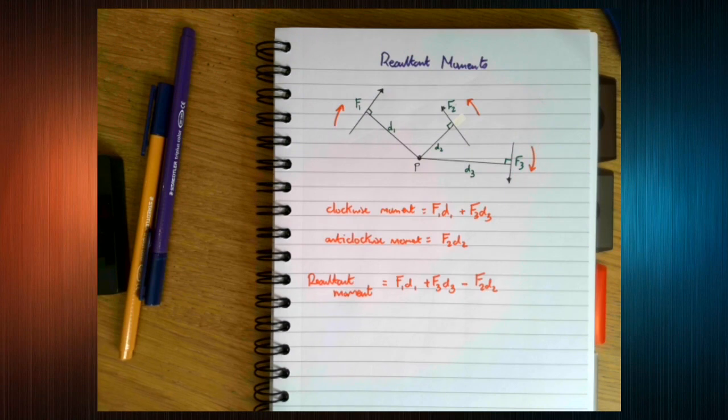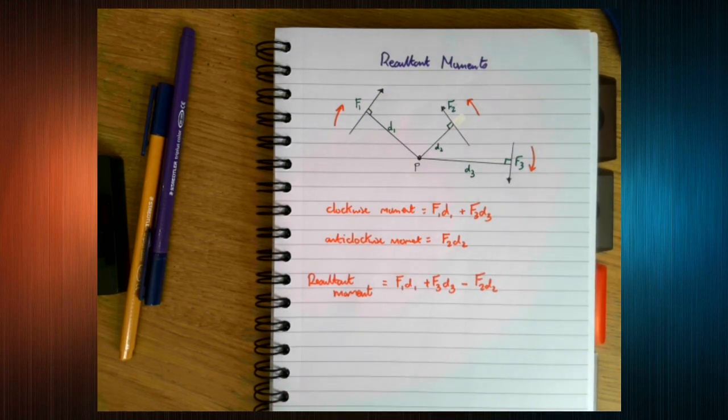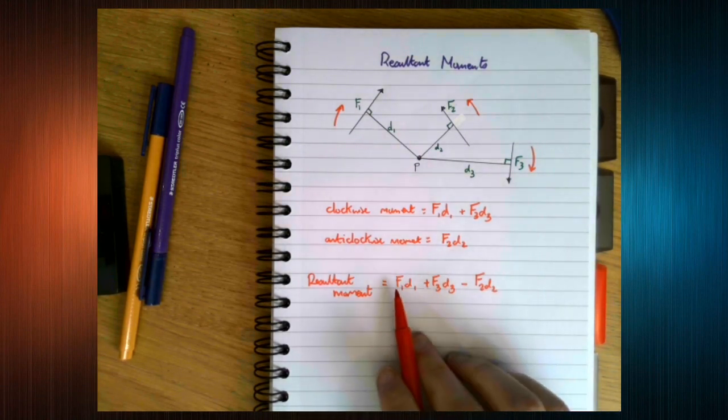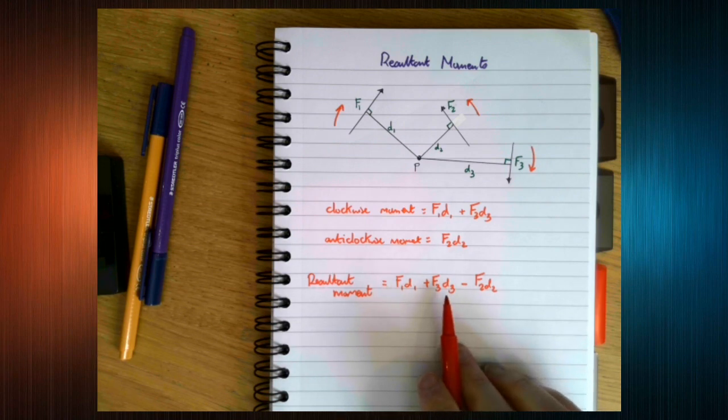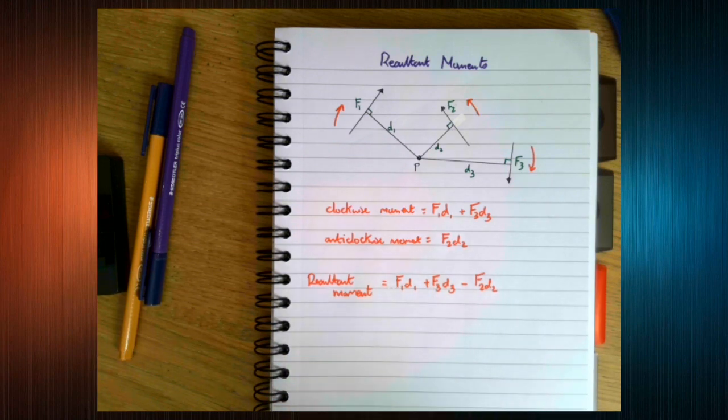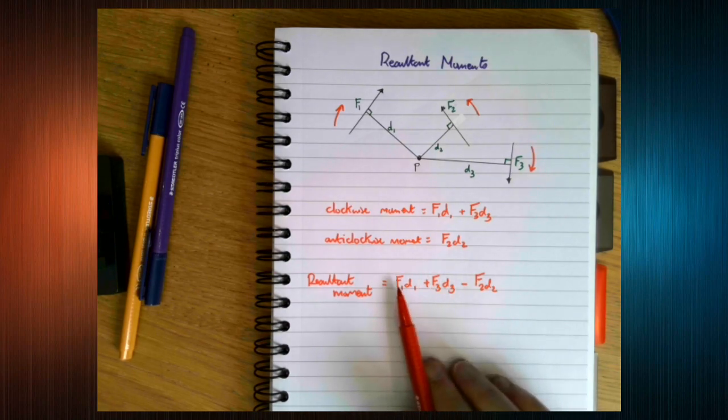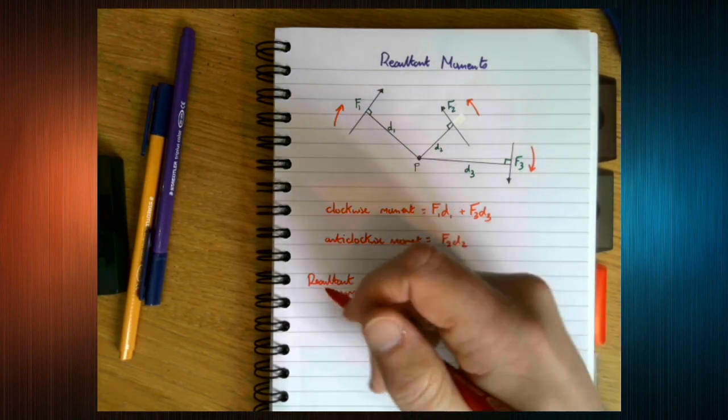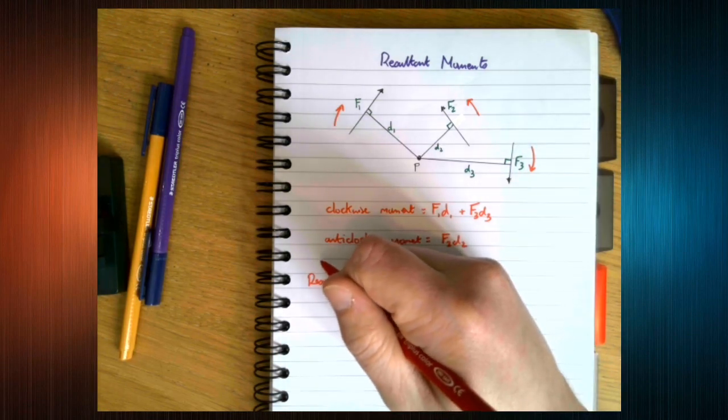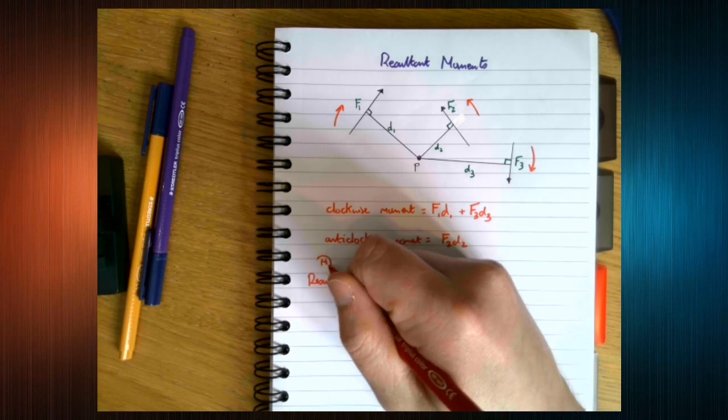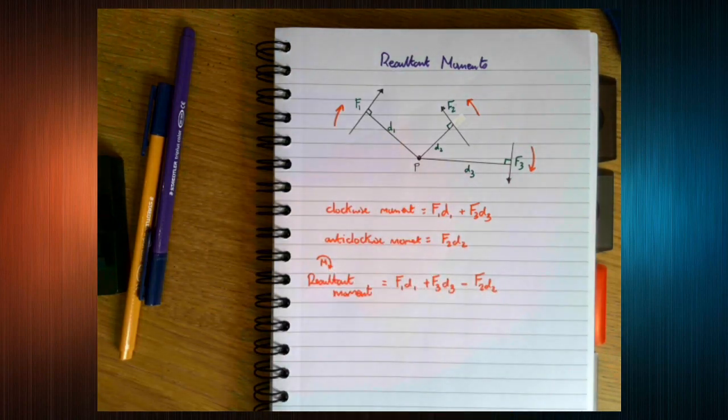Now, obviously I could have done it in the opposite direction. I could have done F2 D2 minus these two added together. All that I have chosen to do in this example is take clockwise as positive. So to indicate that, I'm going to put an M and I'm going to put an arrow around it like that, to say I'm taking moments clockwise.